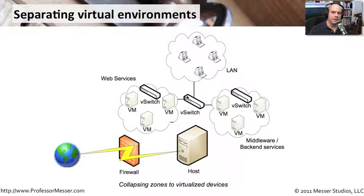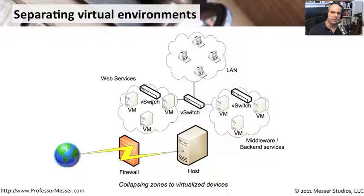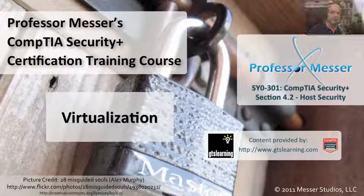If you don't want physically separate virtual environments and prefer to keep everything on a single host, you can separate things out into different networks — a web services network, a back end or middleware network — separated with a virtual switch or even a virtual router. There are all kinds of interesting virtual technologies emerging, including an emerging market for virtual firewalls, so you can have port filtering between your virtual machines, your physical network, and the physical network itself.